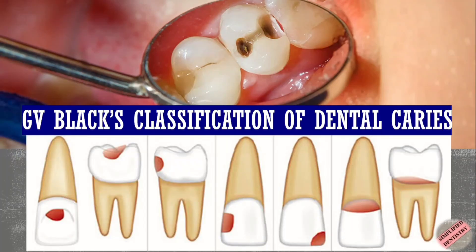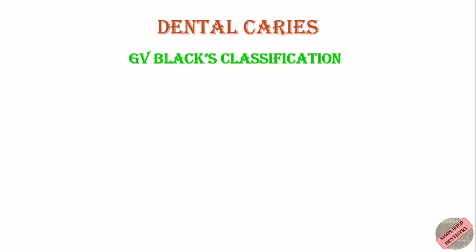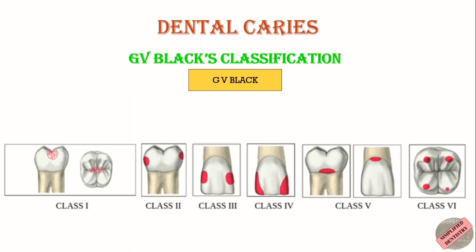This classification was developed by GV Black to categorize carious lesions based on the type of tooth affected — that is, whether the affected tooth is anterior or posterior.